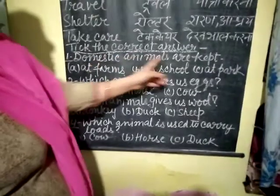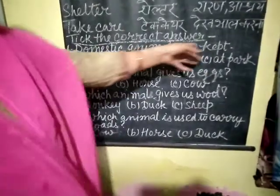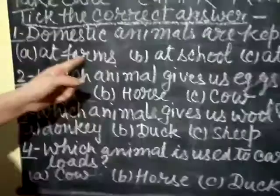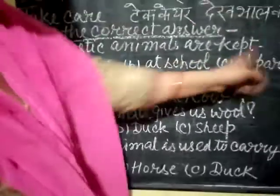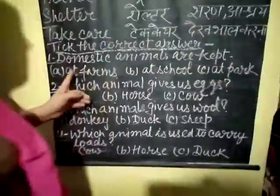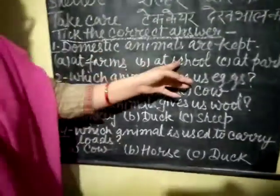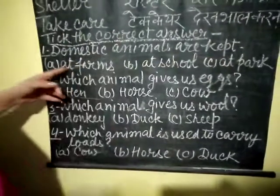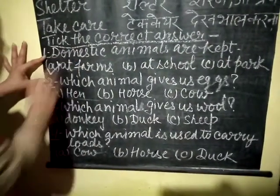Domestic animals are kept — domestic animals rakhye jate hain — at farms, at school, at park. So the right answer is at farms.